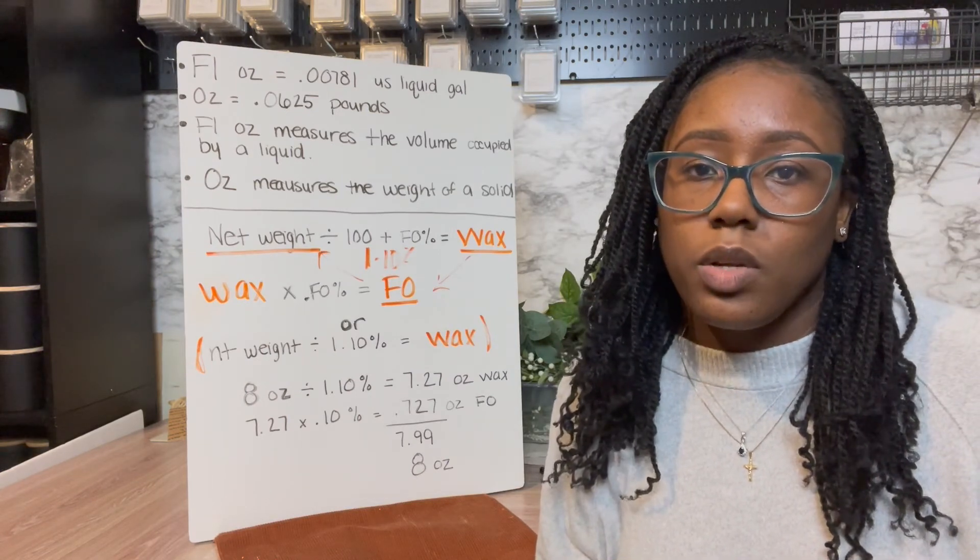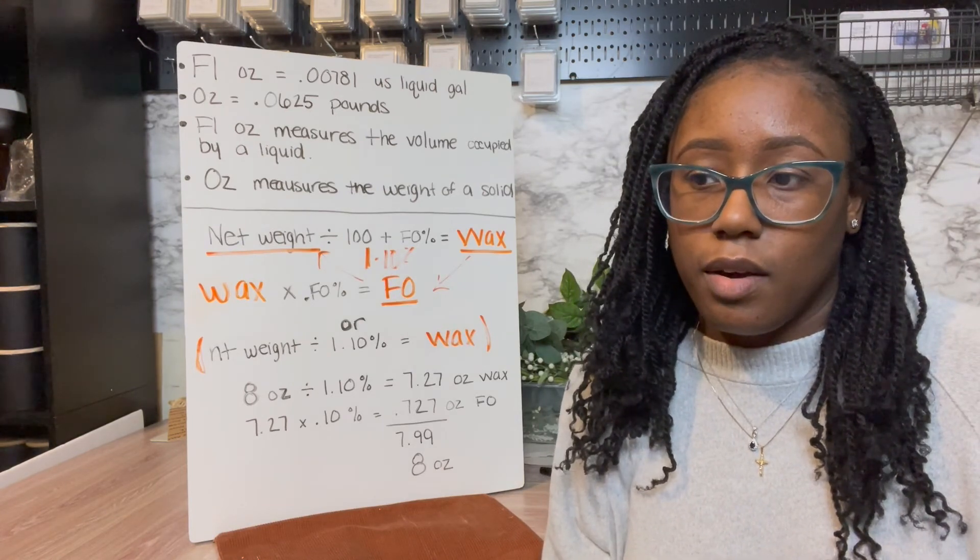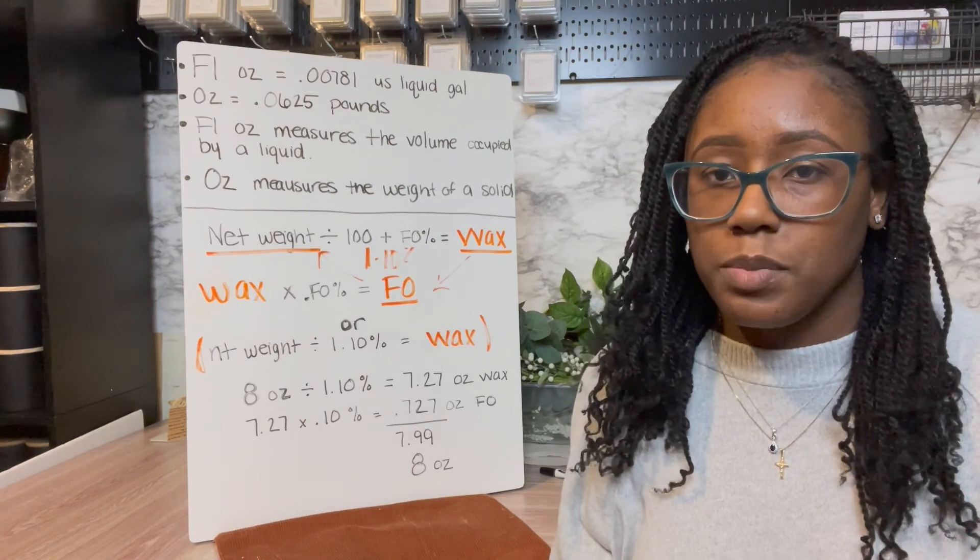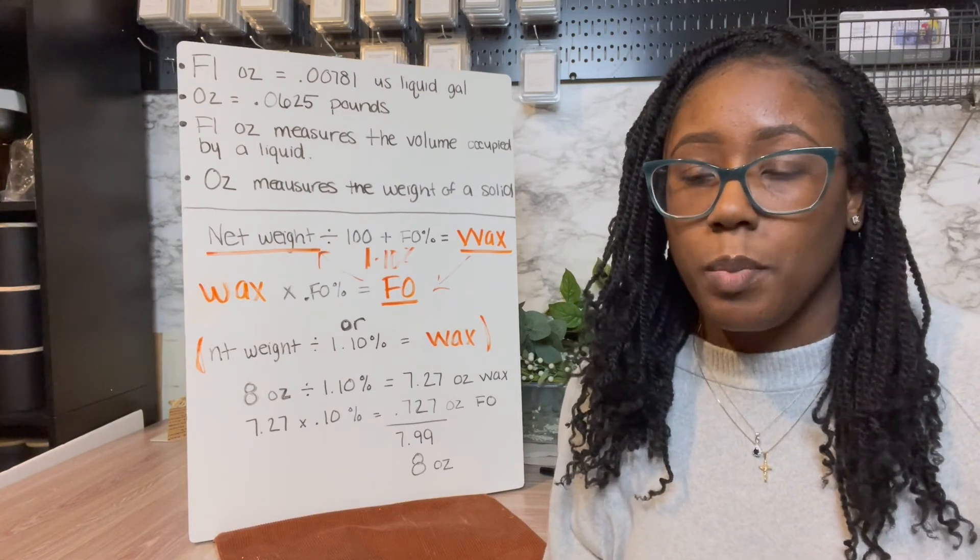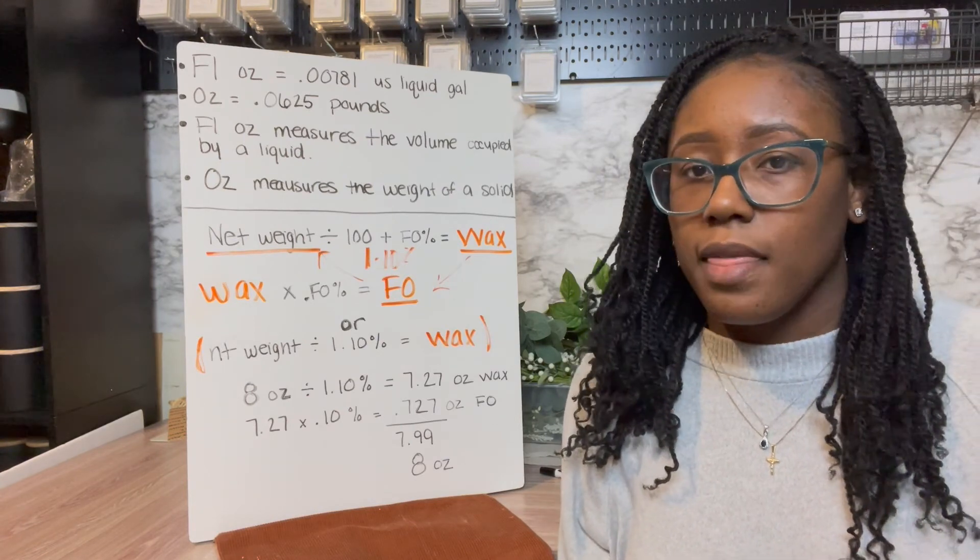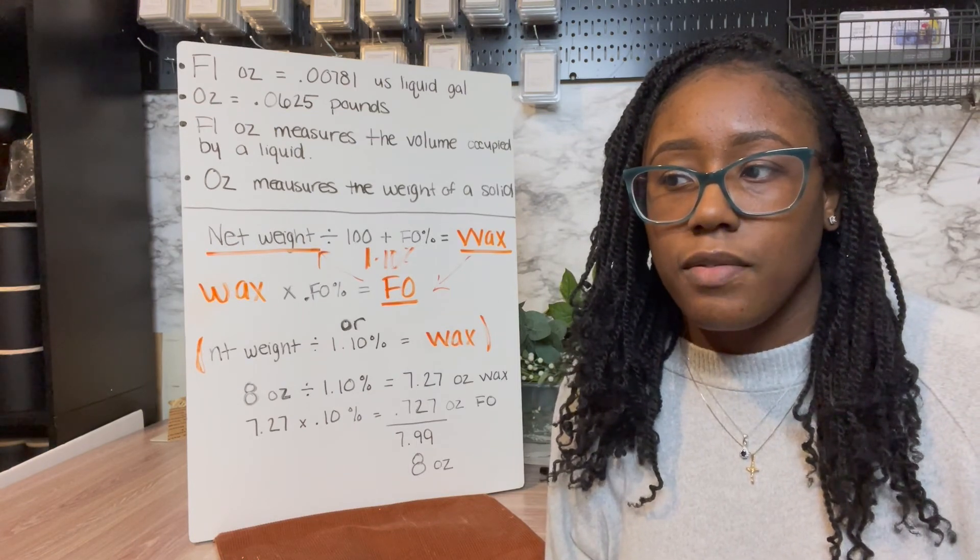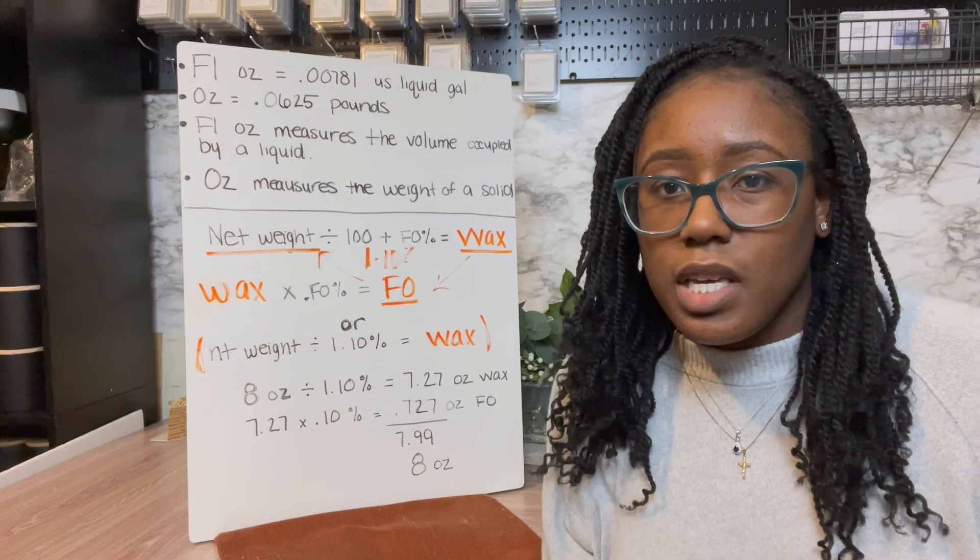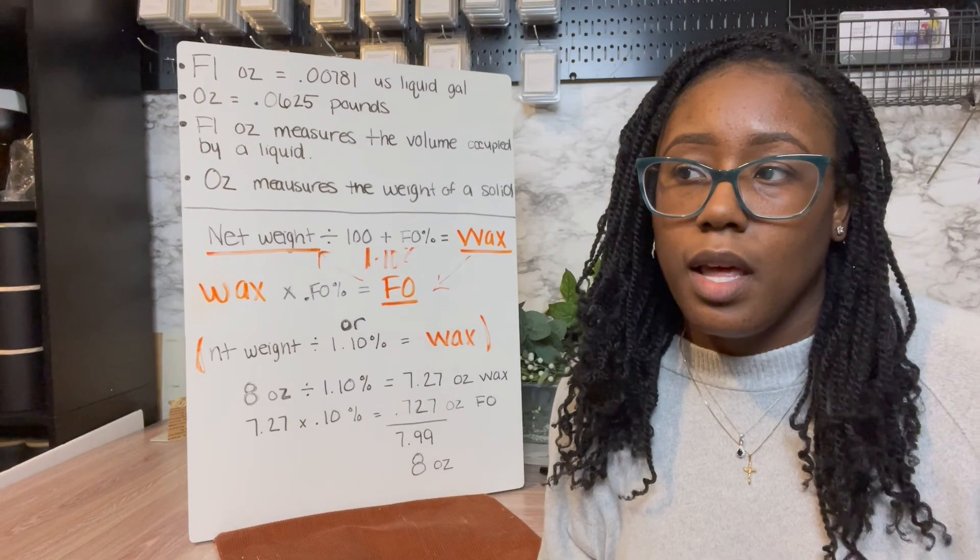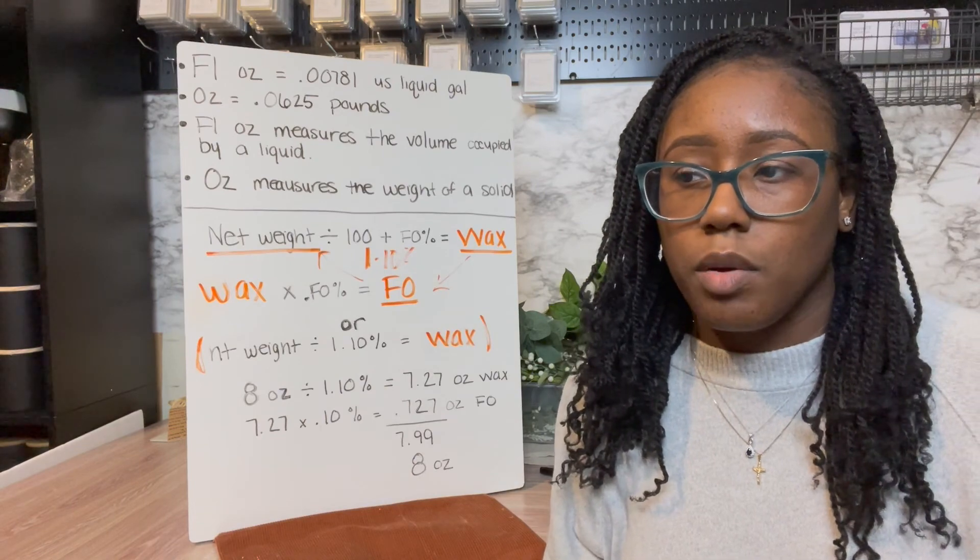But just keep in mind when you are buying vessels online, if you see that their net weight or their fill is measured in fluid ounces, just understand that that was measured with water and not wax. So if you buy the vessel, I know that there's a vessel that I bought from Dream Vessels. I believe they're the Novas and I think the net fill was eight ounces or nine ounces or something like that. So I bought them and then when I got them home, the actual net weight fill for the wax was 6.5. So just keep that in mind when you're buying vessels.